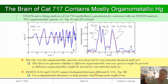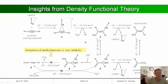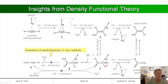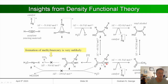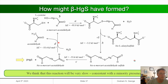Using HERFD-XAS on Cat 717's brain, we found it contains beta-mercuric sulfide and an organometallic form of mercury bound to sulfur — about 78% organometallic mercury. We confirmed this with XAS spectroscopy. The conventional chemical analysis had observed something different, leading us to question whether a different organometallic mercury compound might be present. We used computational chemistry to understand the chemistry within the plant better.